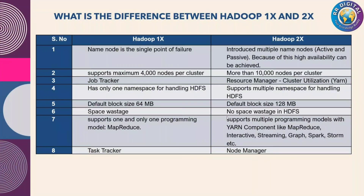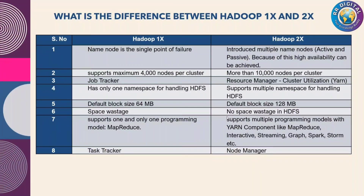Hadoop 1x supports only one programming model, which is MapReduce. In 2x they introduced multiple programming models: MapReduce, Streaming, Graph, Spark, and Storm. Also, Hadoop 1x has only a Task Tracker, but in 2x they renamed it as Node Manager. So these are all the major differences between Hadoop 1x and 2x.